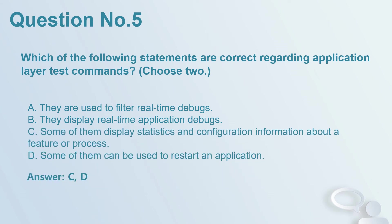Question number 5: Which of the following statements are correct regarding application layer test commands? Choose two. A. They are used to filter real-time debugs. B. They display real-time application debugs. C. Some of them display statistics and configuration information about a feature or process. D. Some of them can be used to restart an application. Answer: C, D.